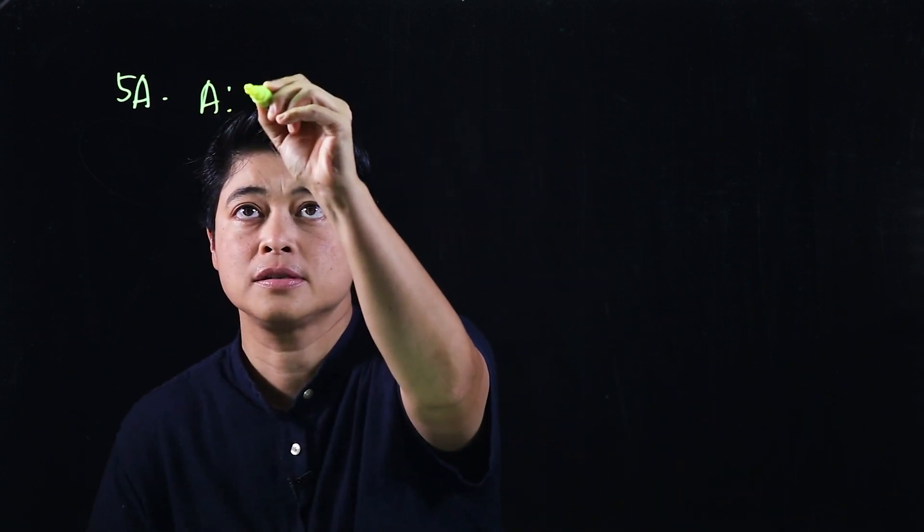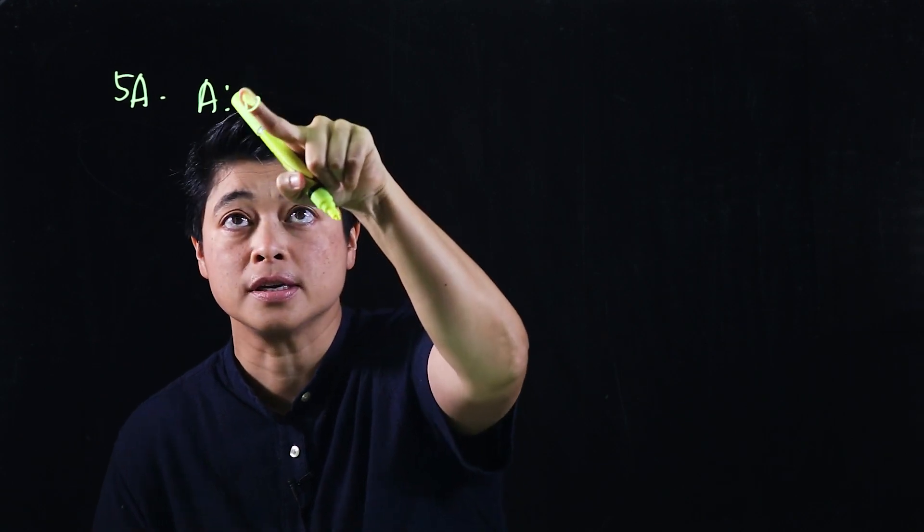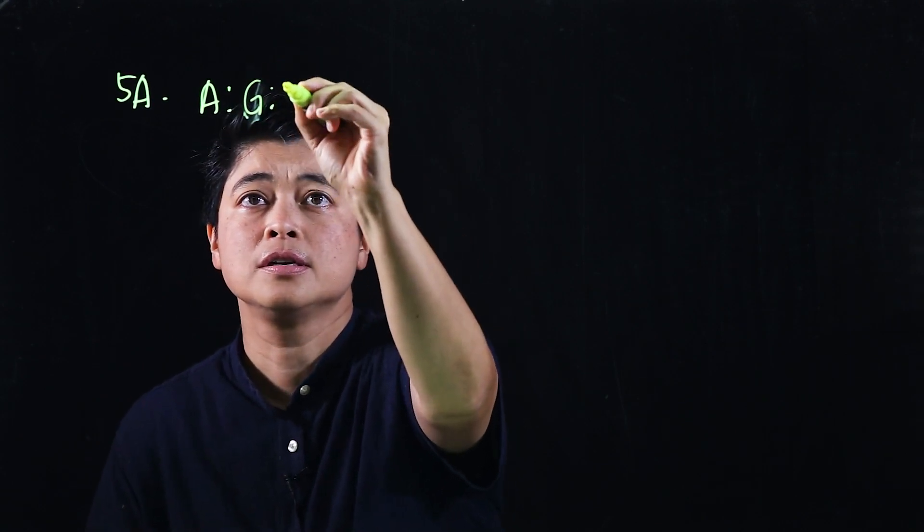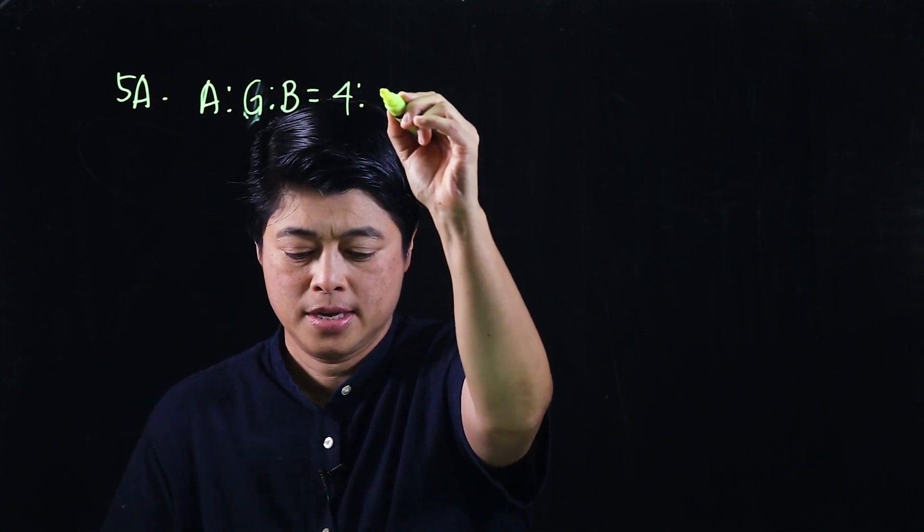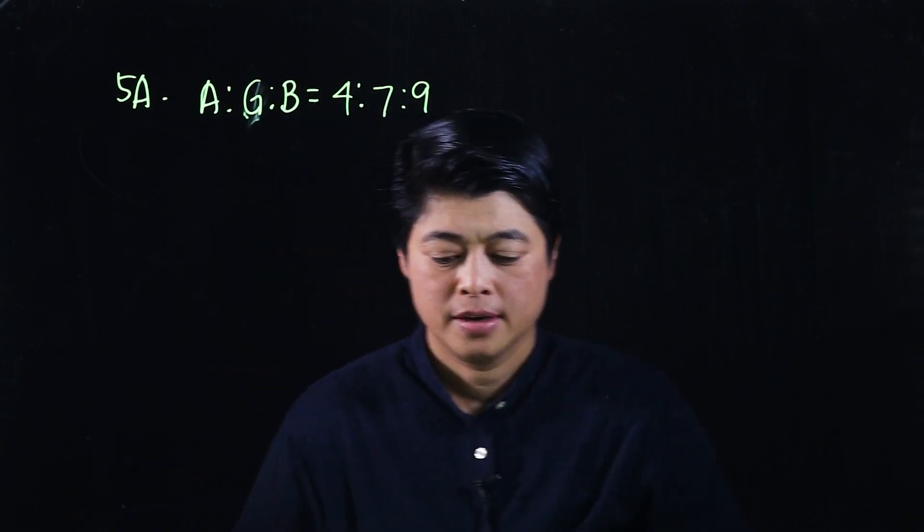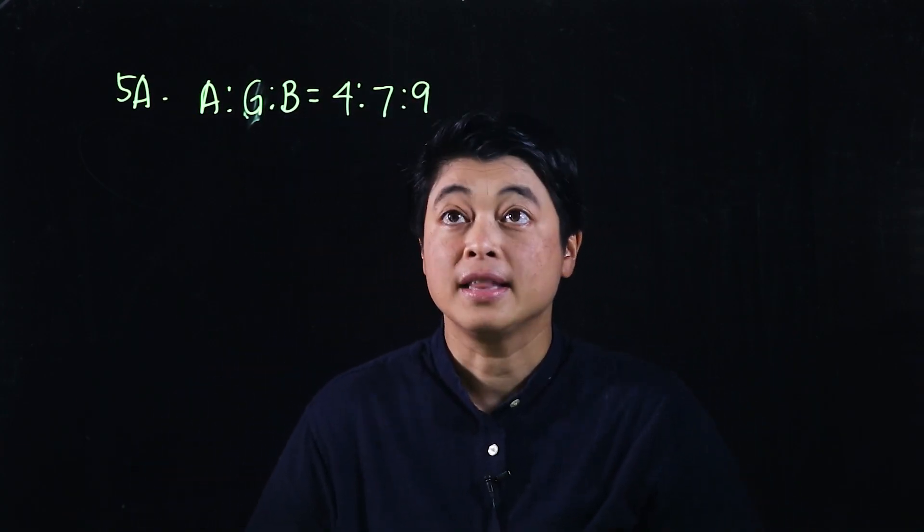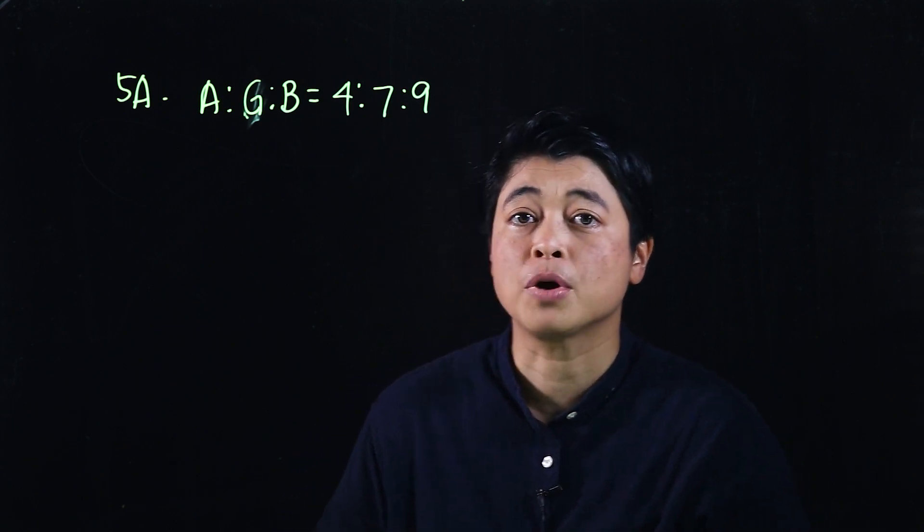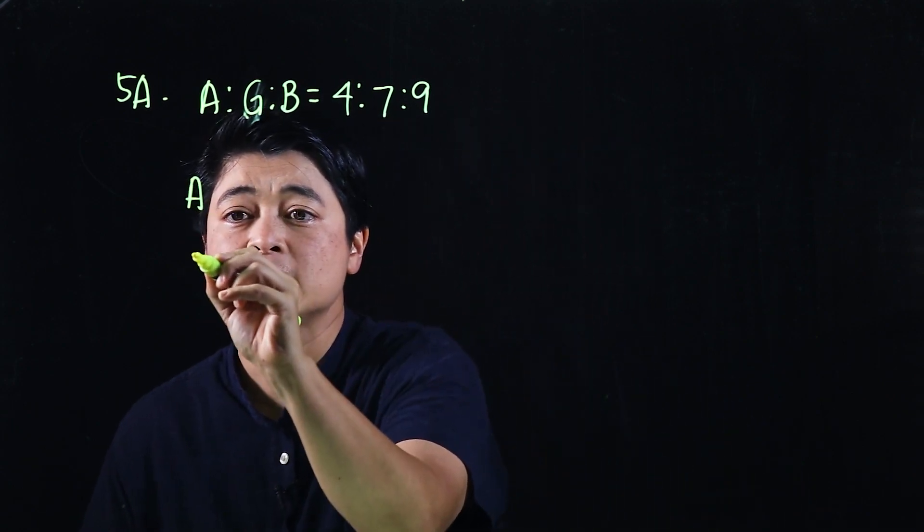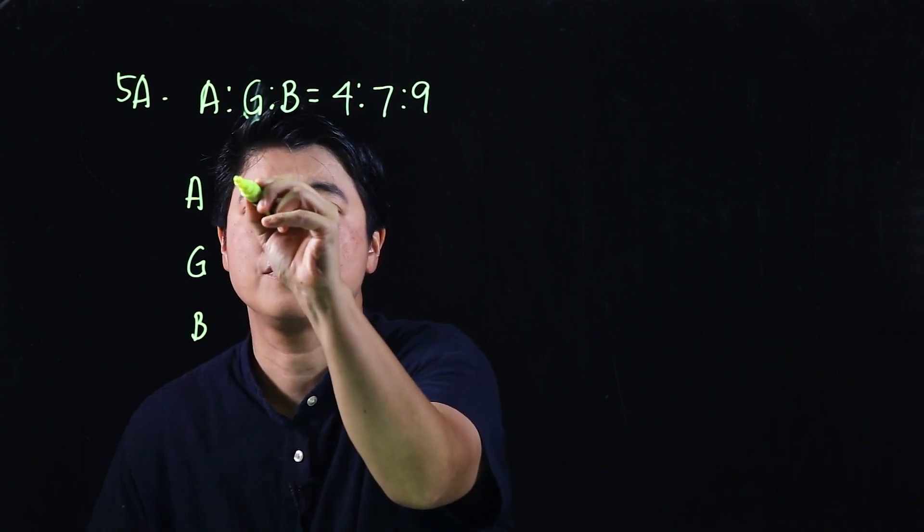Let me write that down: adults to girls to boys is 4 is to 7 is to 9. There are 26 more boys than girls. How many adults were at the carnival? So here they gave a bar model which is similar to that last bar model that we made. This has 4 divisions.